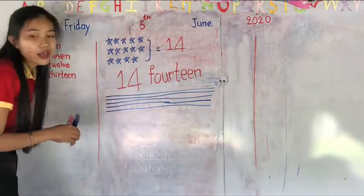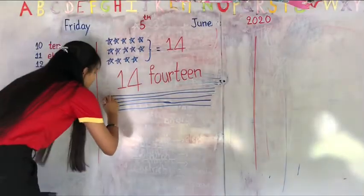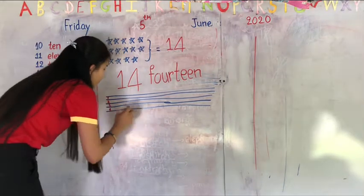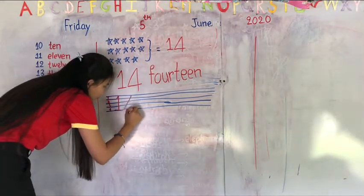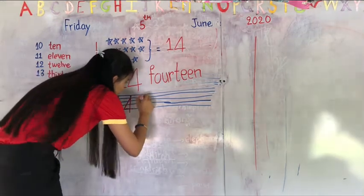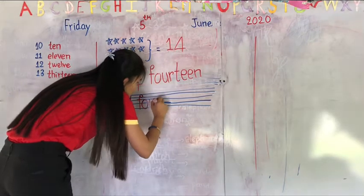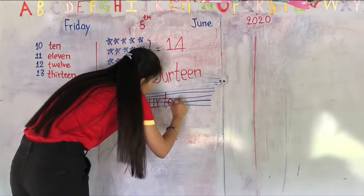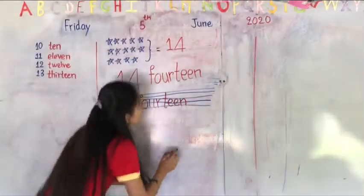Okay, this is the column. In one column there are four rows. One row, two rows. So fourteen, F-O-U-R-T-E-E-N. Fourteen.